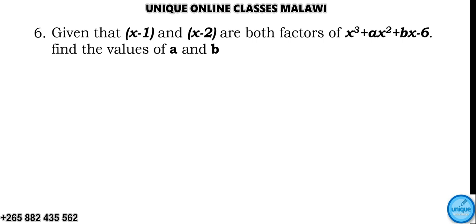Let's see how we solve this polynomial problem. It has been asked by one of the students on WhatsApp. It reads: given that x minus 1 and x minus 2 are both the factors of this polynomial, we should find the value for a and b in that polynomial.